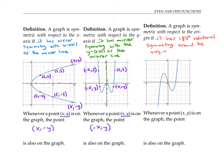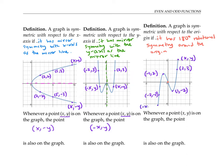The point (1, -2) is on this graph. If I rotate that point around the origin by 180 degrees, I get the point (-1, 2). If I start with the point (2, 3) on the graph and rotate by 180 degrees, I get the point (-2, -3). In general, if I start with a point (x, y) and rotate 180 degrees around the origin, I get the point (-x, -y). So we can say that a graph is symmetric with respect to the origin if whenever a point (x, y) is on the graph, the point (-x, -y) is also on the graph.